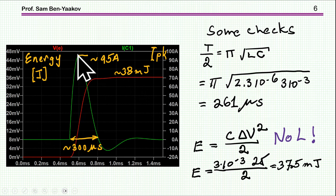The peak current is at this value here. Let's do some checks to see where we are. If this would have been—and it is—a resonant circuit LC, then this is like half of a period of this oscillation, and it measured to be 300 microseconds. So half of a period of a resonant circuit is pi times square root of LC, and it comes to be 261.